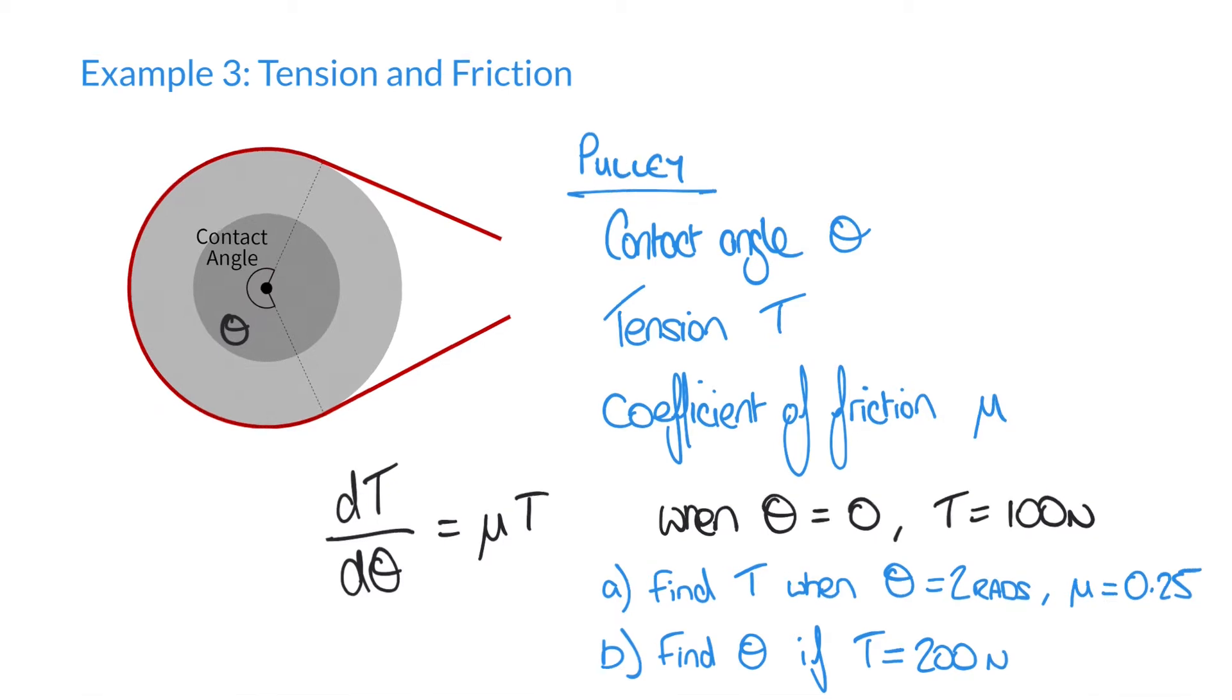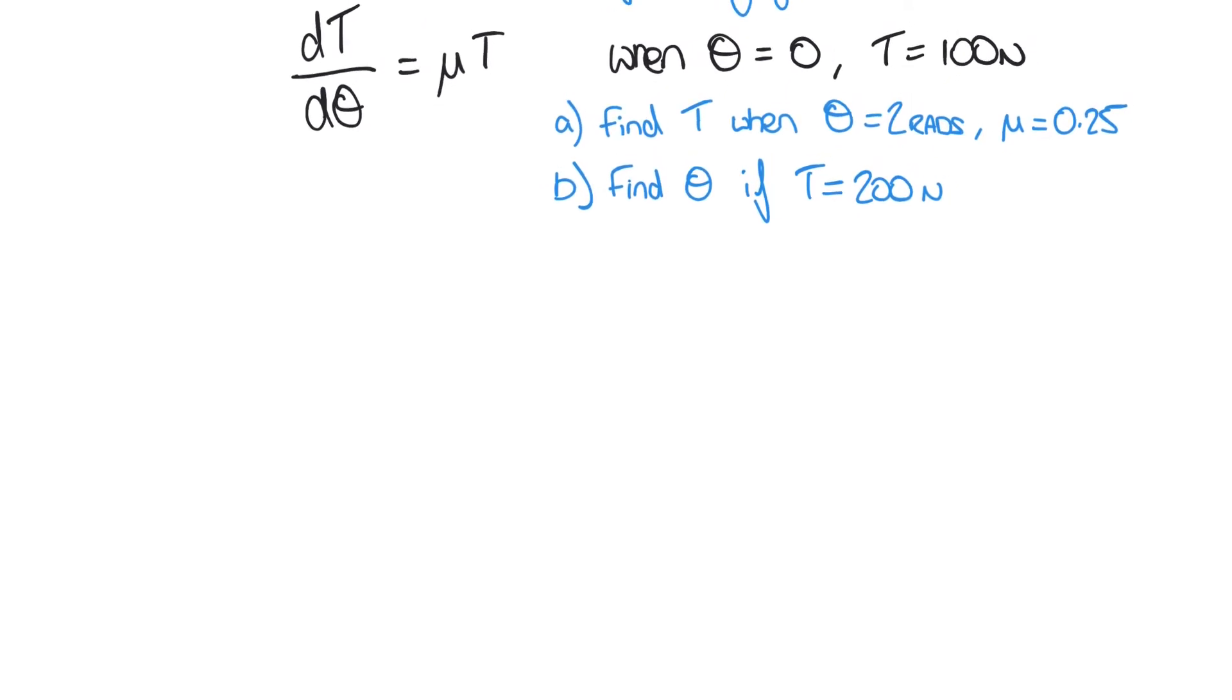So first of all, in order to work out part a, we're going to rearrange our equation to collect like terms. Similar to our previous examples, rather than dT/dθ equals μT, we now have dθ equals dT over μT. Another way we can express that same thing is to say that dθ is equal to 1 over μT dT. And so what we notice here is we now have an expression where we've collected like terms in that all of the theta terms are on the left-hand side and all of the T terms are on the right-hand side.